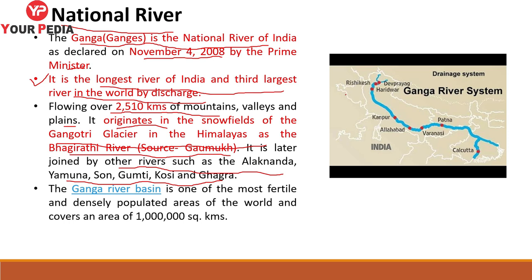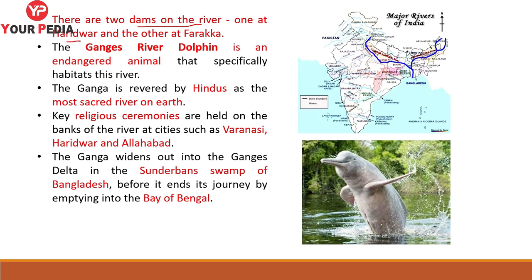There are two dams on this river: the first at Haridwar and the other at Farakka. The Ganga is considered sacred by Hindus; key religious ceremonies are held on its banks in cities such as Varanasi, Haridwar and Allahabad. The Ganga widens out in the Sundarbans swamp of Bangladesh before emptying into the Bay of Bengal. The Ganga River Dolphin is an endangered animal that specifically inhabits this river.